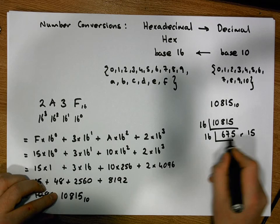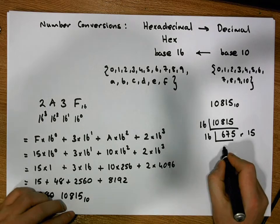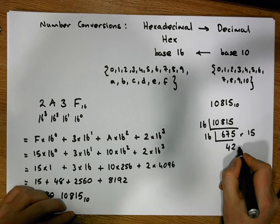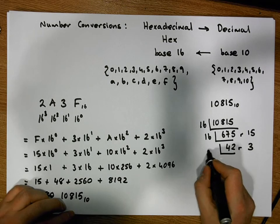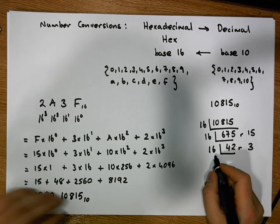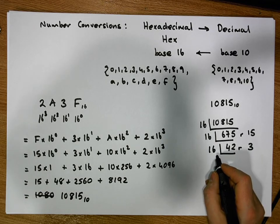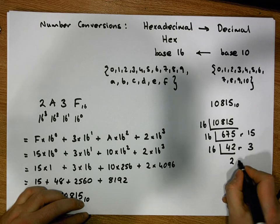So we have 675 divided by 16. 16 goes in 42 times with a remainder of 3. What about 16 into 42? Well, 42 divided by 16 goes 2 times with a remainder of 10.